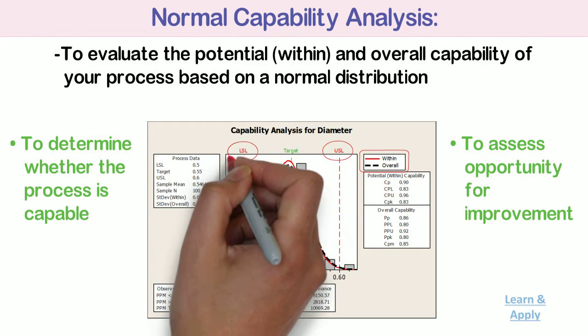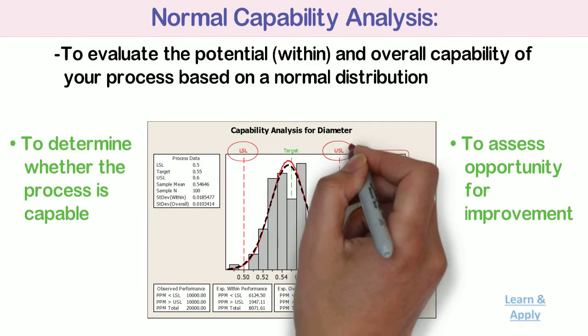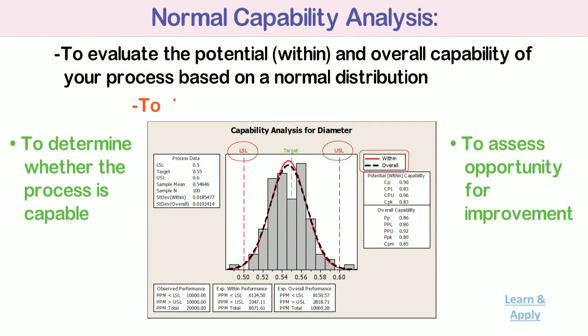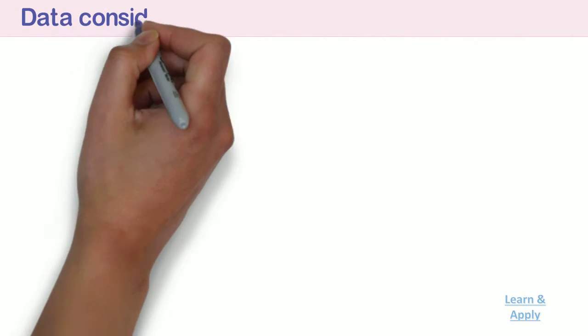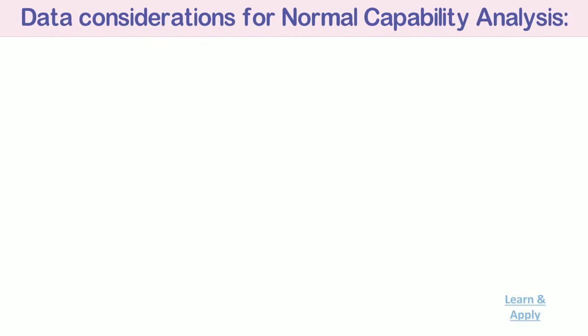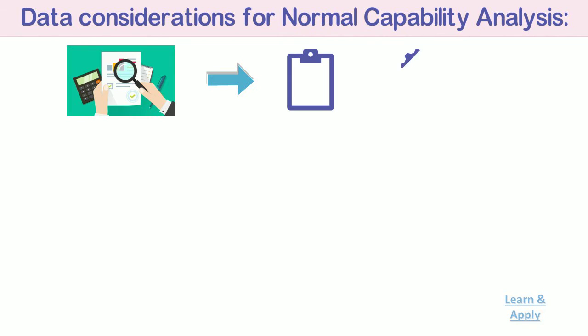To perform this analysis, you must specify a lower or upper specification limit, or both, to define your process requirements. To ensure that your results are valid, consider the following guidelines when you collect the data, perform the analysis, and interpret your results.